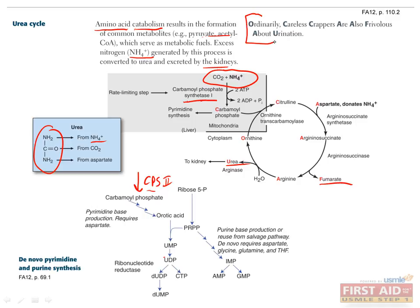A mnemonic that can help you remember the rest of this cycle is ordinarily careless crappers are also frivolous about urination, which stands for ornithine, carbamoyl phosphate, citrulline, aspartate, argininosuccinate, fumarate, arginine, and urea.